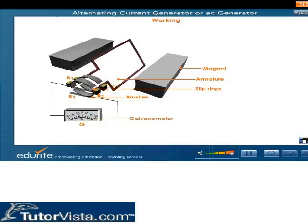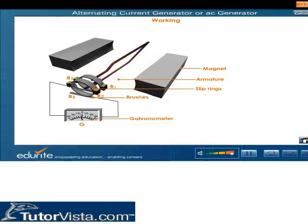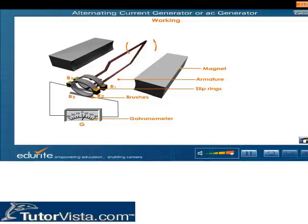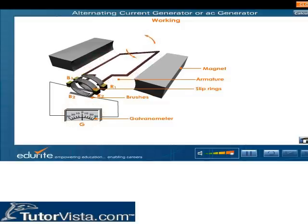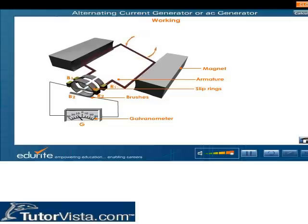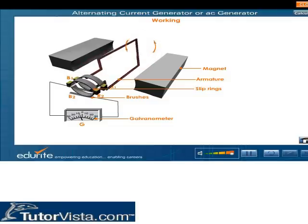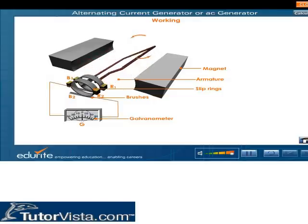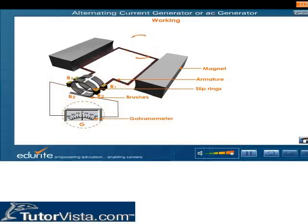Thus, the flux keeps on changing continuously with time. This change in magnetic flux induces an EMF. If the outer terminals of the armature are connected to an external circuit, an electric current flows through it. The deflection of the galvanometer needle indicates that an EMF is induced.